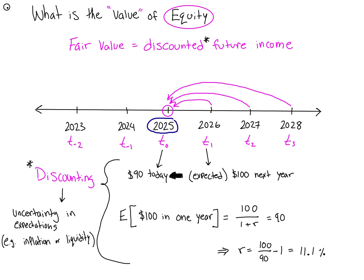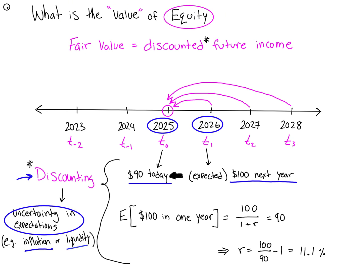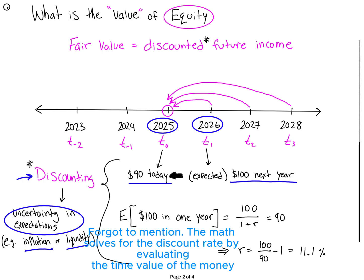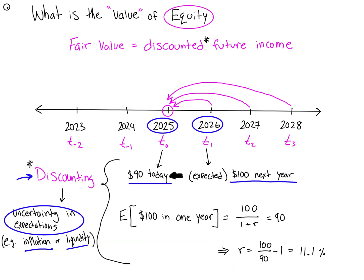Let's break it down into simple terms. Say today t0 is 2025, and t1 is next year, 2026. If we expect NVIDIA to give us $100, we would say the fair value today is $90. Why is it lower? This is the concept of discounting - discounting accounts for uncertainty and expectations, which can take the form of inflation, liquidity, or other factors.